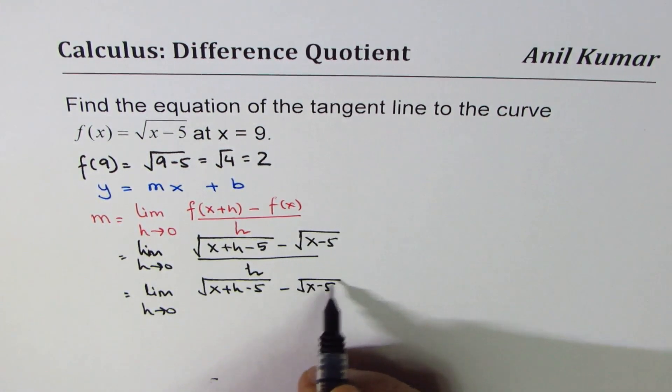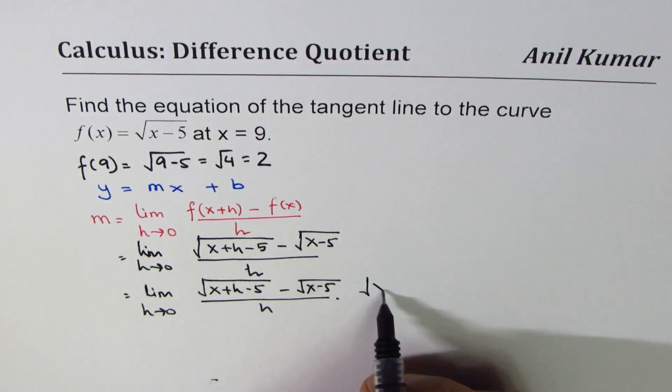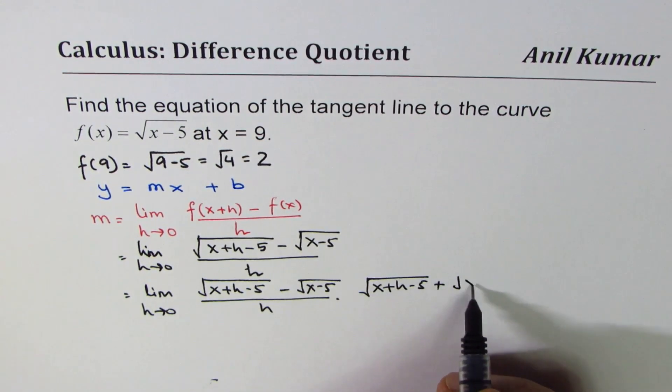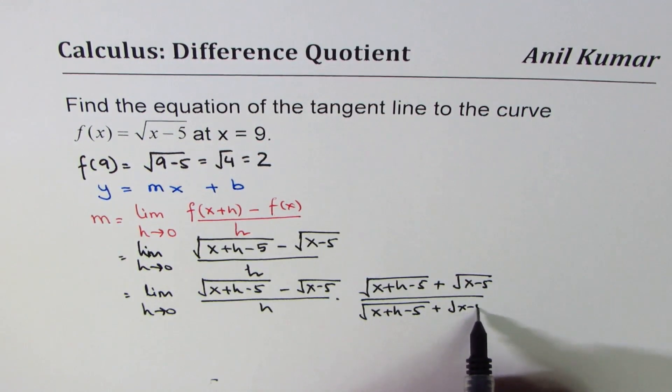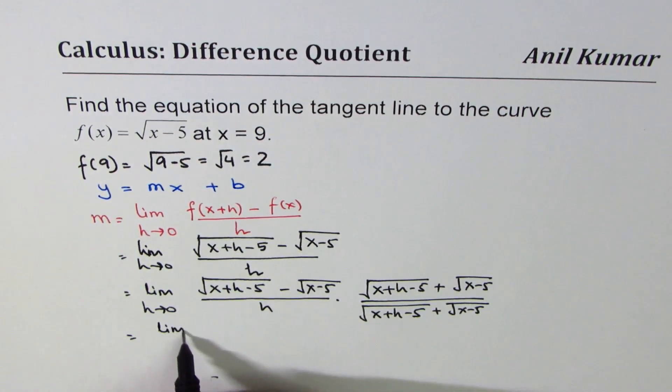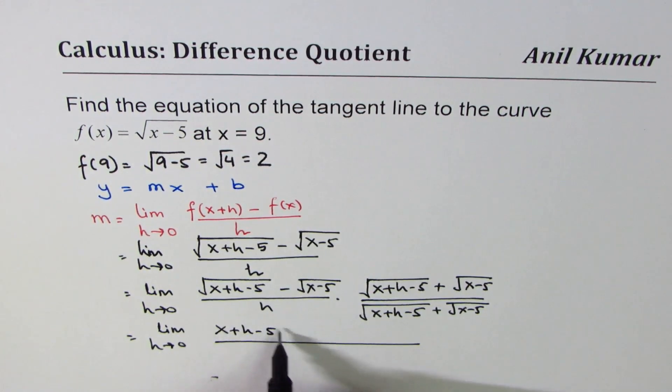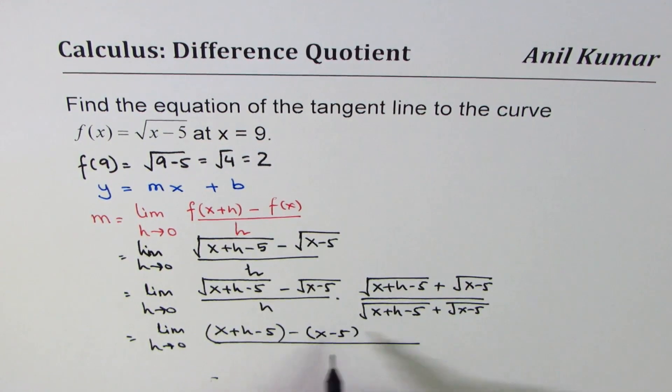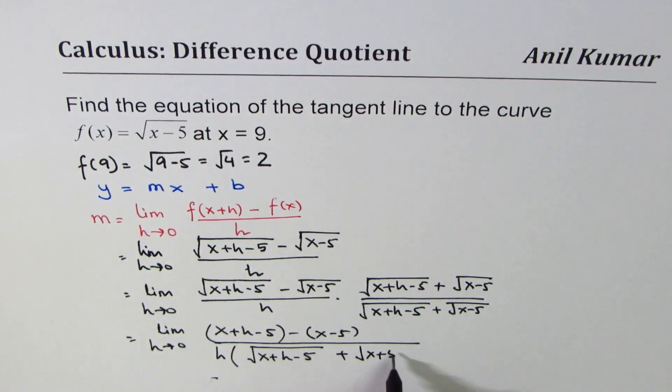Minus square root of x minus 5 over h times, when we rationalize, we'll multiply and divide by conjugate of this, which is square root of x plus h minus 5 plus square root of x minus 5. So now you can apply the formula (a minus b)(a plus b) equals a squared minus b squared. So you get limit h approaches 0. In the numerator, this square means x plus h minus 5 minus that square means x minus 5. And here we have h times square root of x plus h minus 5. Never expand the denominator, keep them in factored form. That is kind of key to understand the whole process. Plus square root of x minus 5.